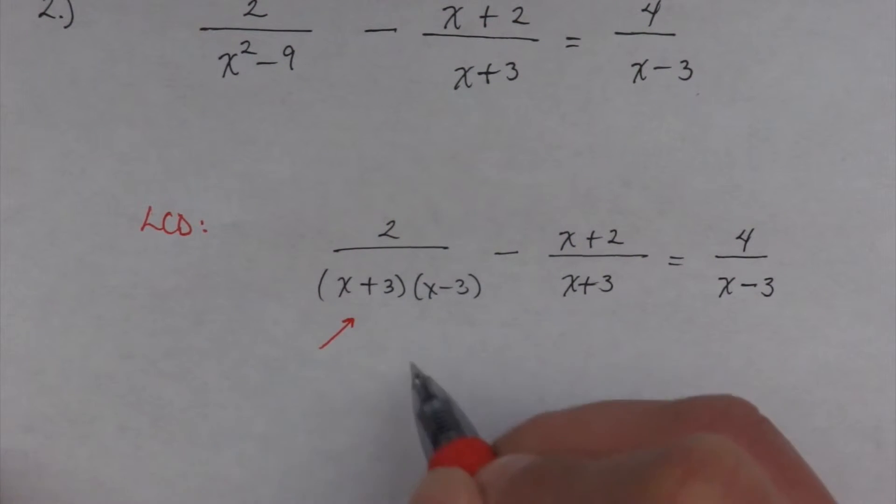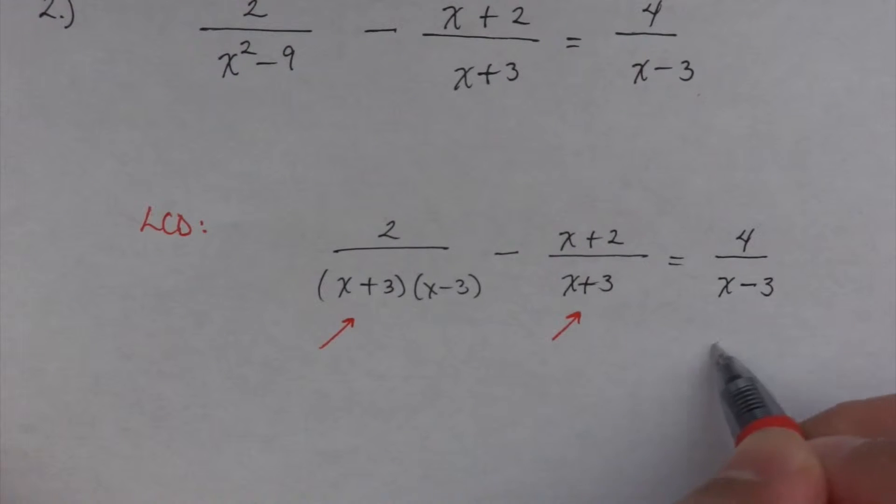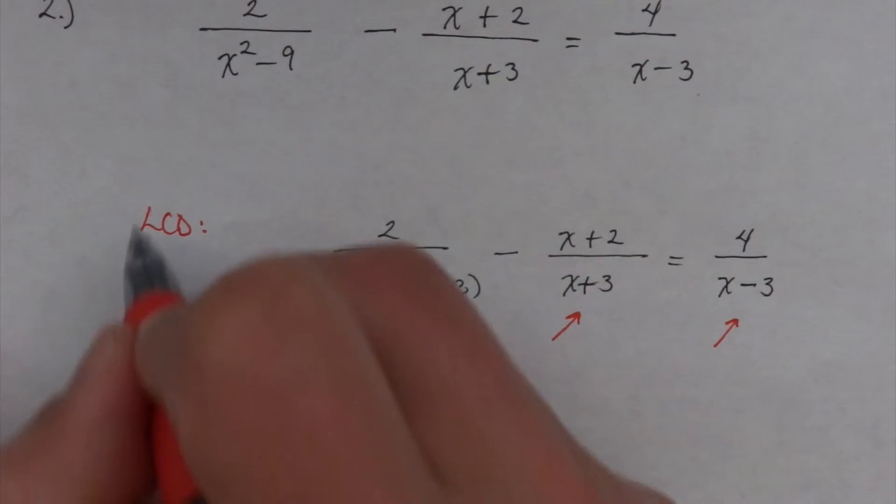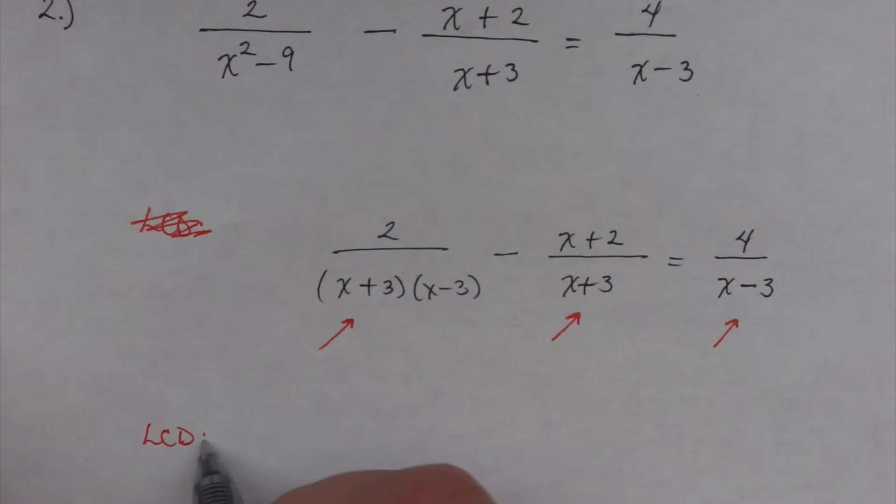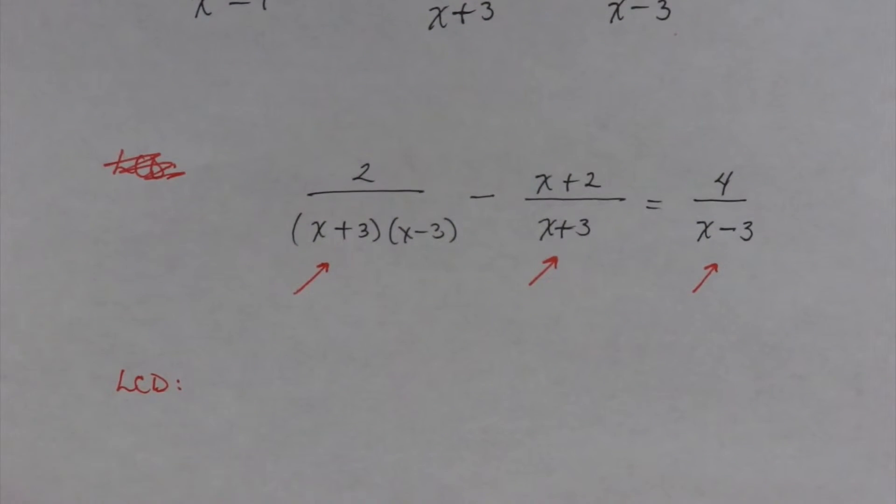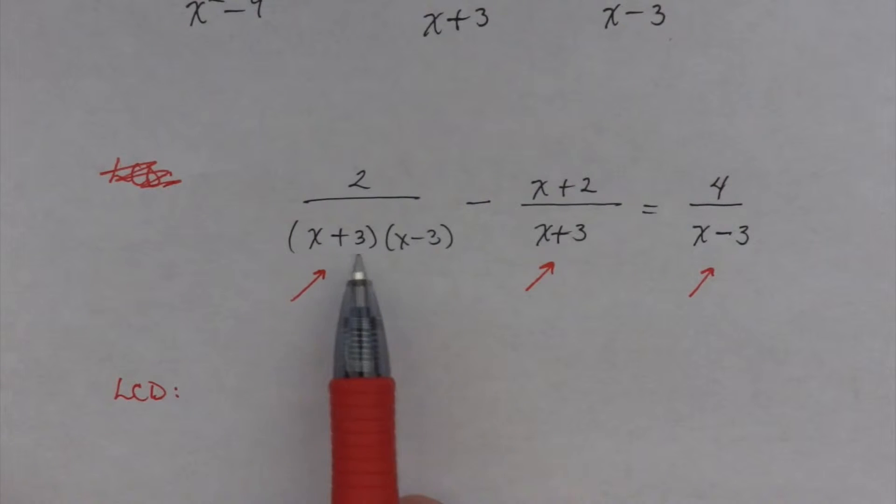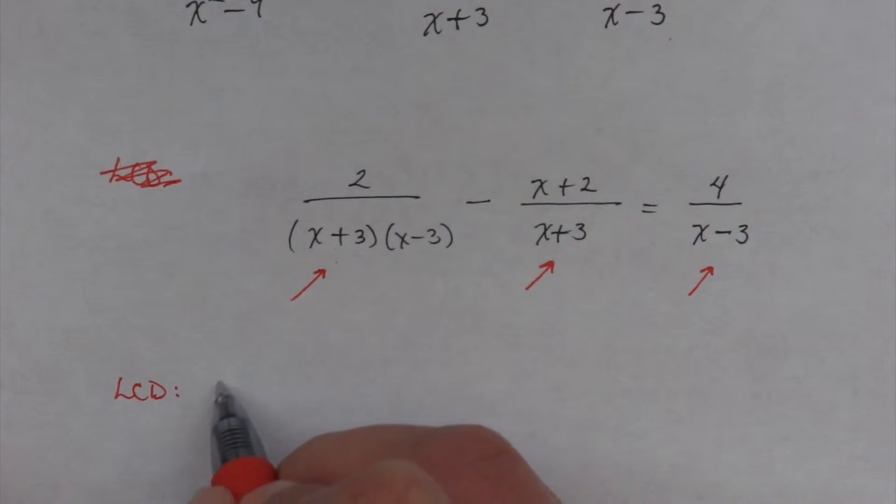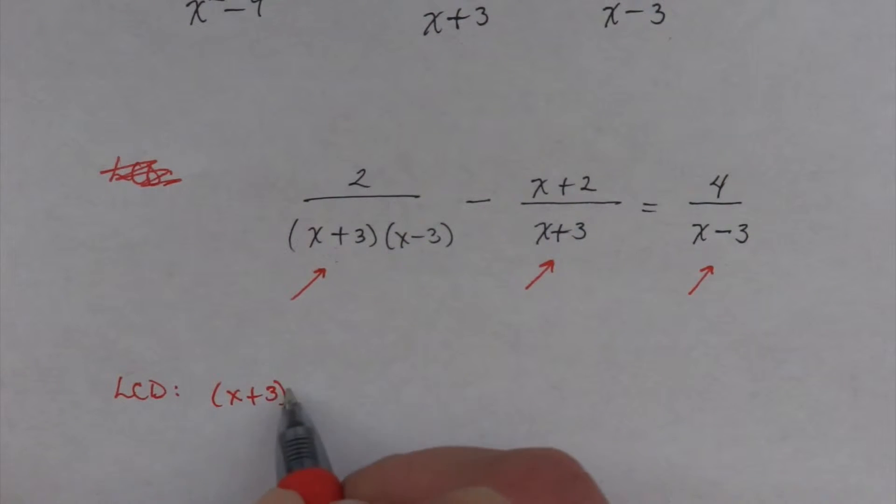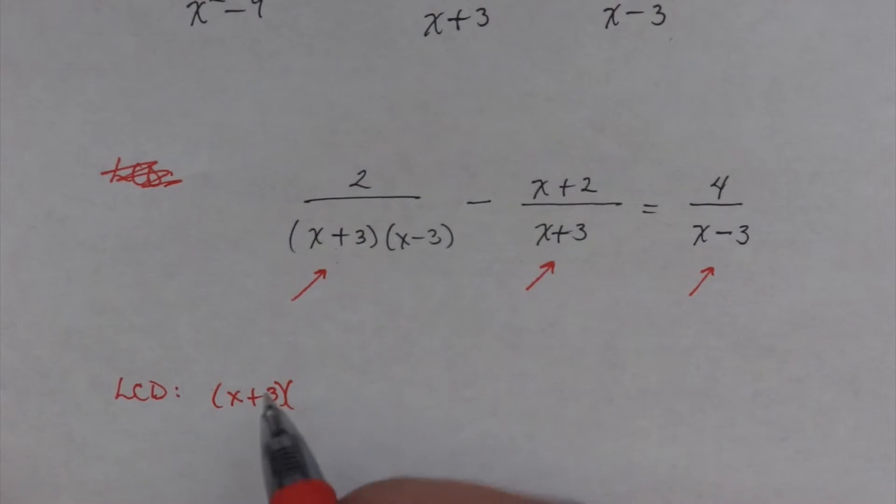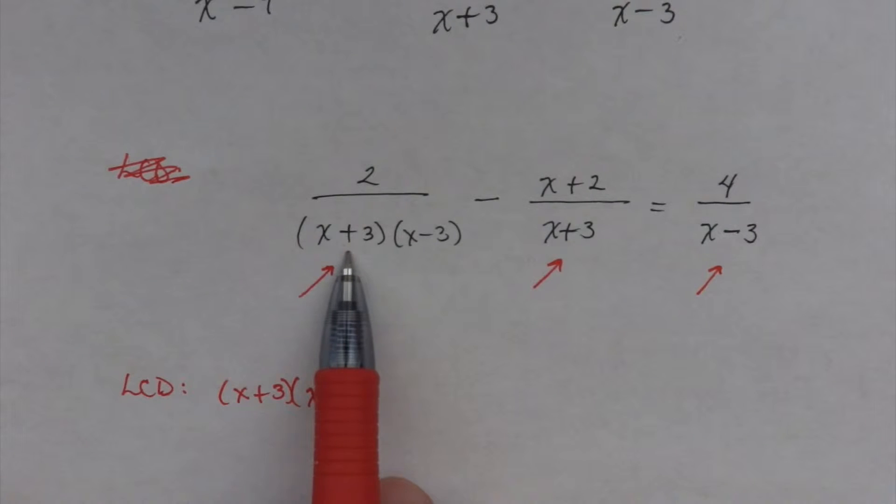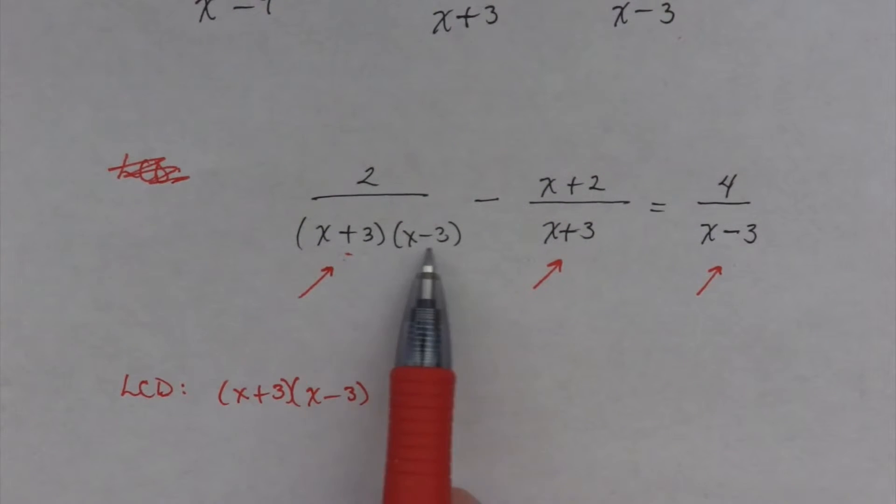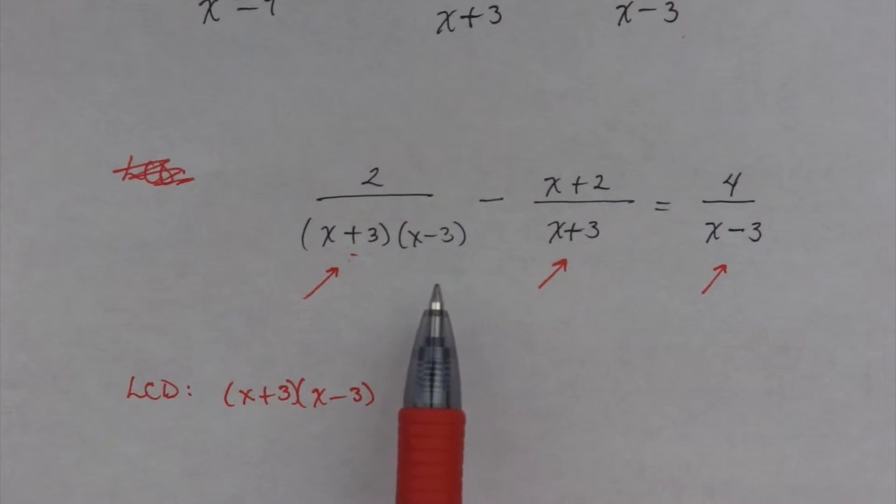That's a minus, x + 2 over x + 3 equals 4 over x - 3. And you can see now that I can pretty much see what my LCD is going to be. Over here I have x + 3, x - 3, x + 3, x - 3. Let me write this over here. So my LCD is going to be, I just need one of these. Now you notice I need an x + 3 in each of them. And I also need an x - 3.